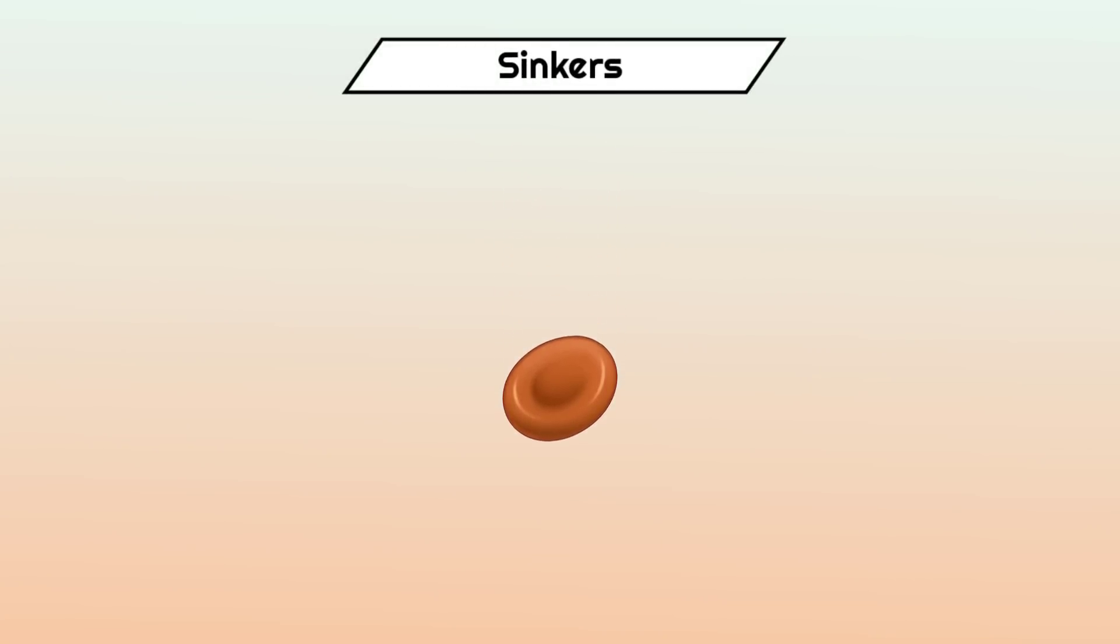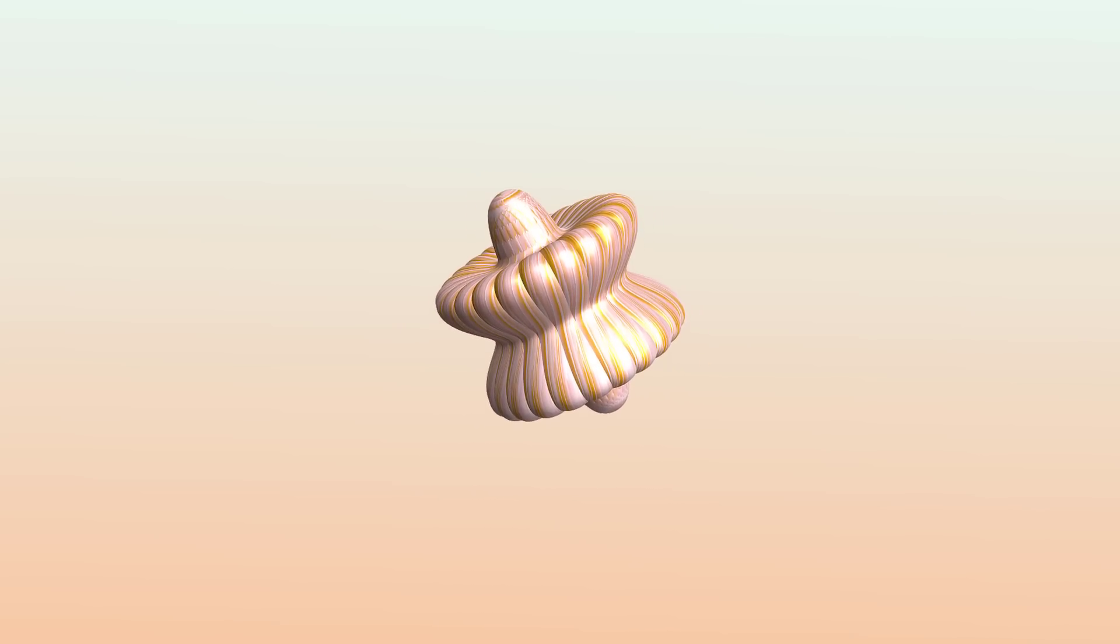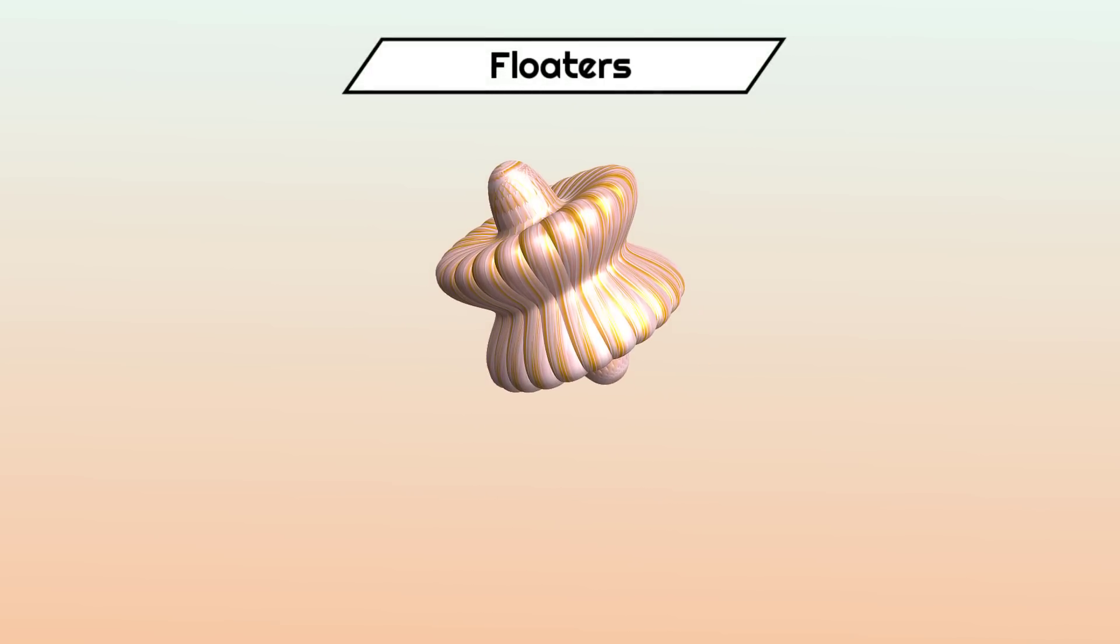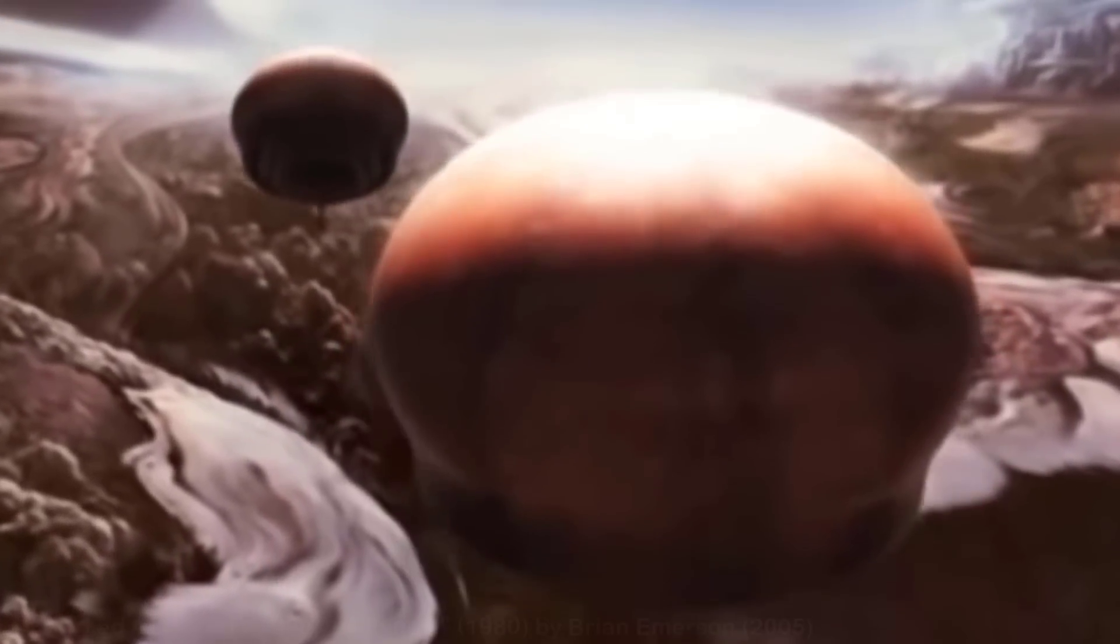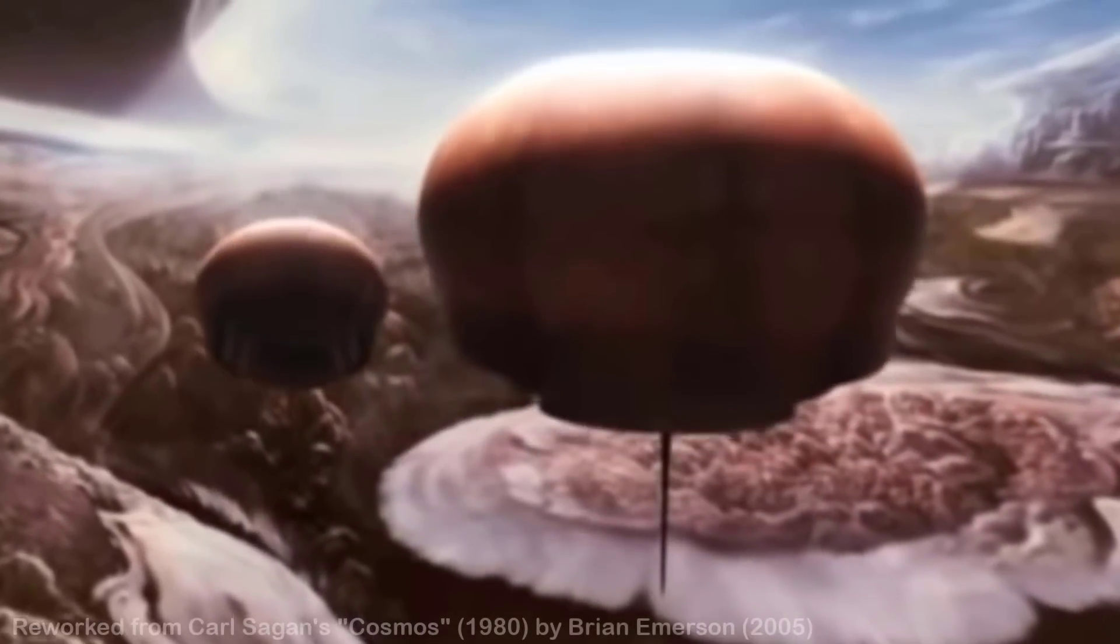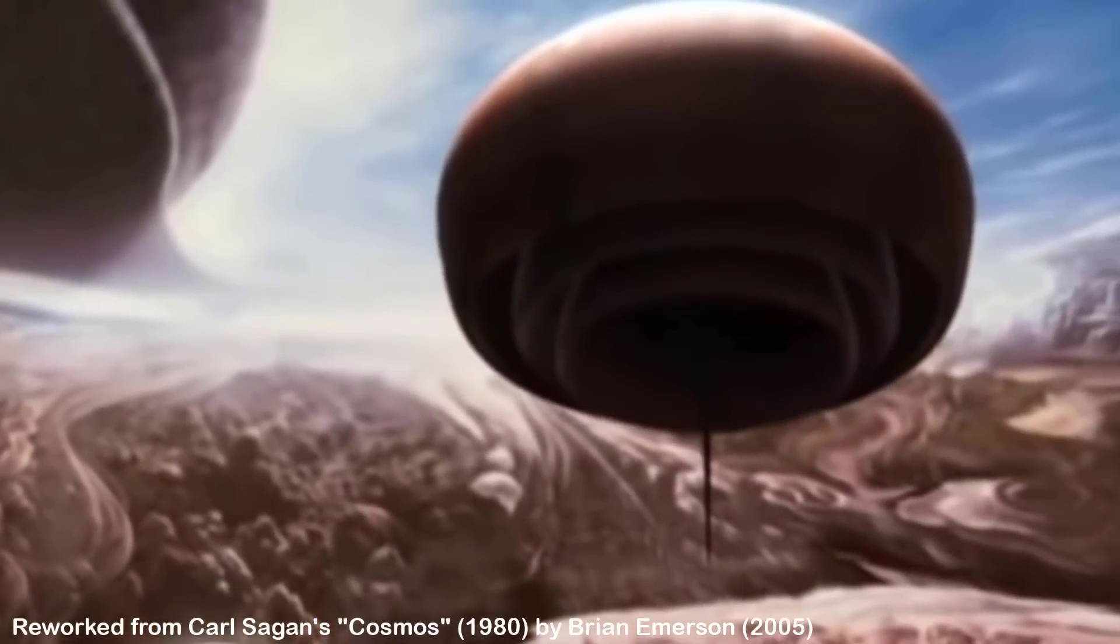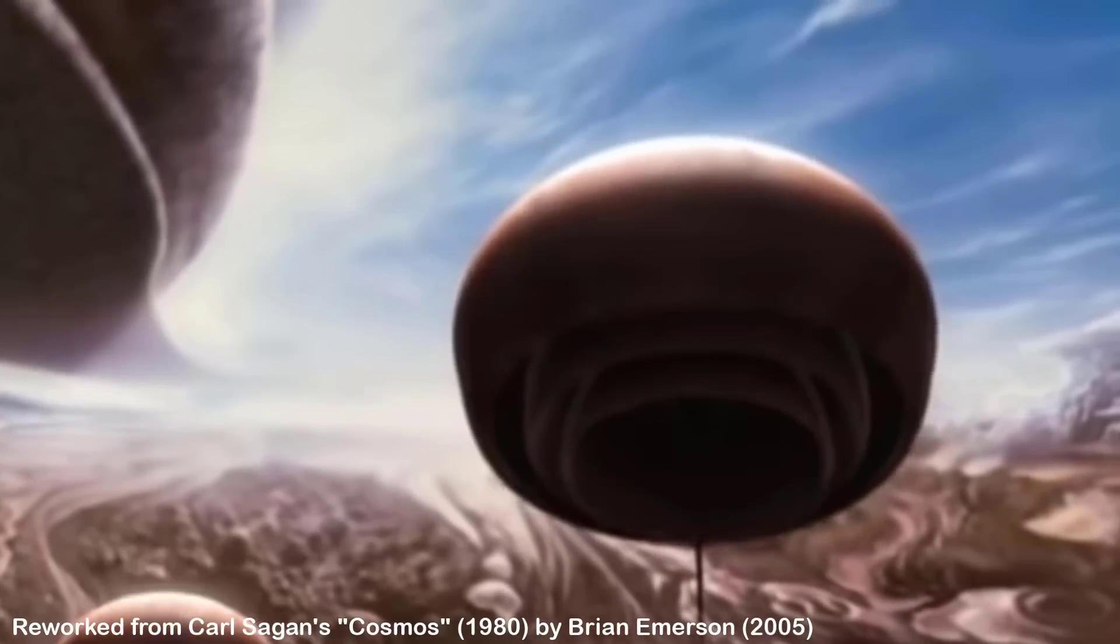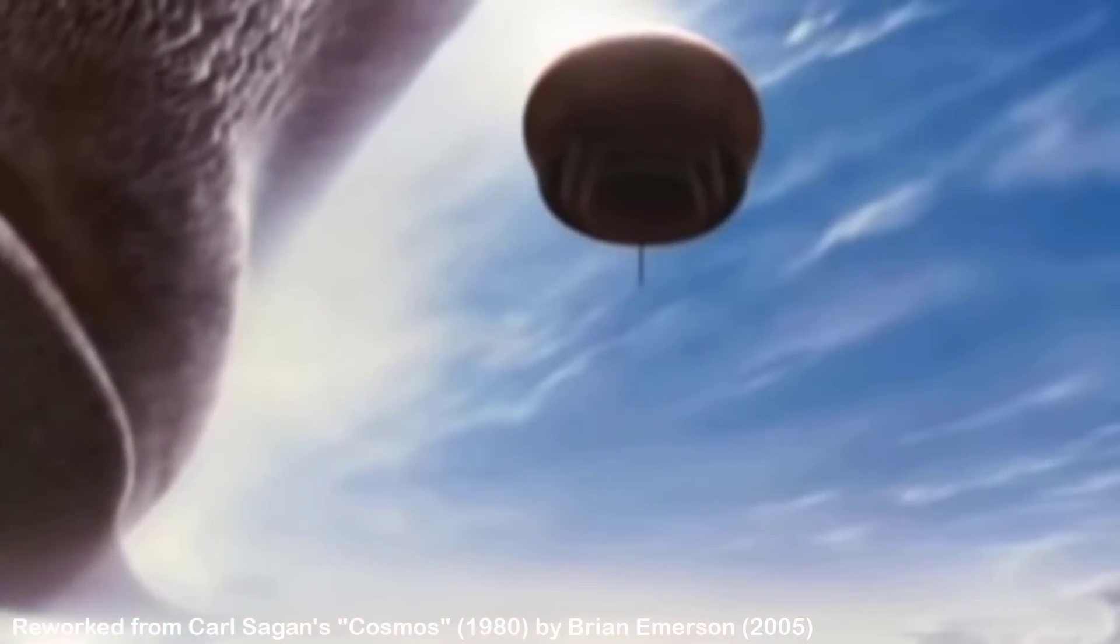Another class of organisms would start to specialize in bringing their density down to avoid sinking to lower levels and could do this by taking in lighter elements such as hydrogen. These so-called floaters are envisaged to eventually swell into balloon-like forms. Their weight could be decreased continuously by pumping out the heavier helium in favor of hydrogen, or they could heat their internal gas stores much like a hot air balloon. It's even inferred that some of the floaters could grow to sizes many kilometers across.